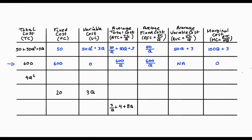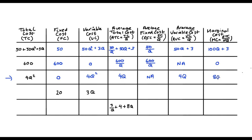In the third example, our total cost has no constant, so there is no fixed cost component. It follows from this that our total cost is equal to our variable cost, which is 4Q². Average total cost will be equal to average variable cost, which is equal to 4Q, and average fixed cost is just not applicable here. Marginal cost will be the derivative of our total cost function, which here is equal to 8Q.